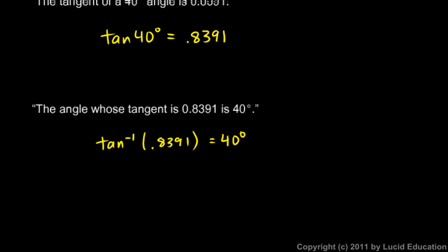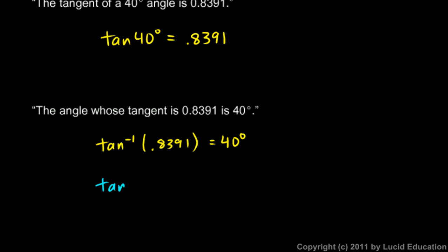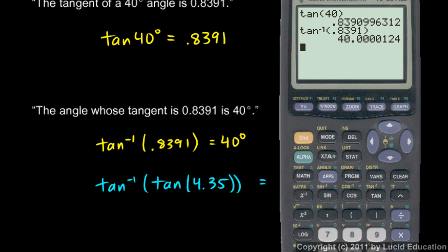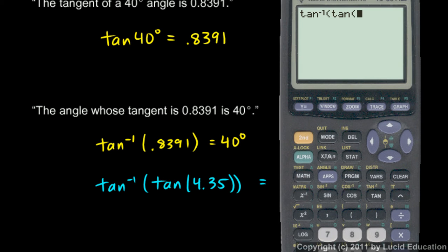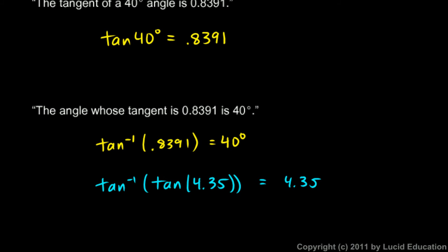For example, if we type in the inverse tangent of the tangent of 4.35, that should just give us 4.35, and you can see that on the calculator. The inverse tangent and the tangent are inverse operations — just like the square root of 3 squared just gives you 3. Just as the square root and the square undo each other, the inverse tangent and the tangent undo each other.